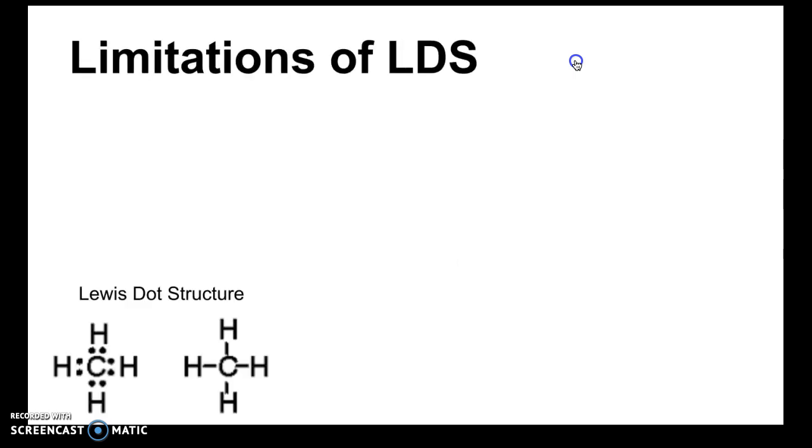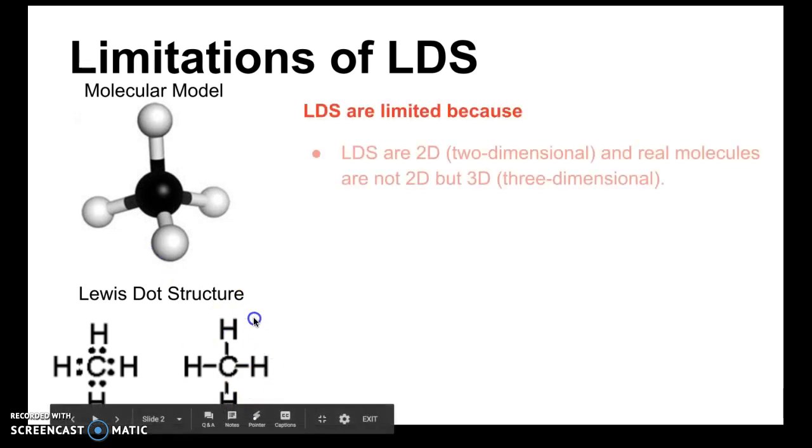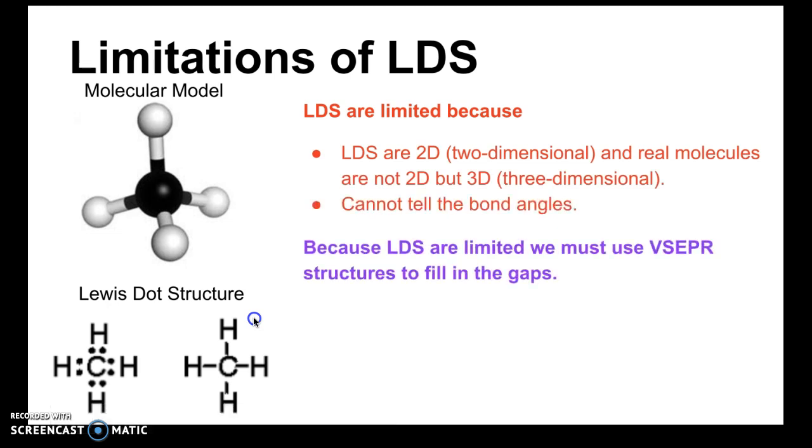Alright, so as we've talked about throughout this unit, Lewis dot structures are limited because real molecules, and here's like a model of a real molecule of methane, they are three-dimensional and they have volume and they have certain angles that you can't see in a Lewis dot structure as shown below. So because Lewis dot structures have these limitations that we can't determine the shapes or the bond angles from them, we have to use VSEPR structures.